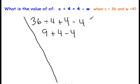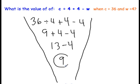Next step from left to right is going to be 9 plus 4. 9 plus 4 is 13 and we'll write in the minus 4 there. Again, even if you're solving this in your head, you need to show your work. 13 minus 4 equals 9. So the value of c divided by 4 plus 4 minus w, when c equals 36 and w equals 4, is 9.